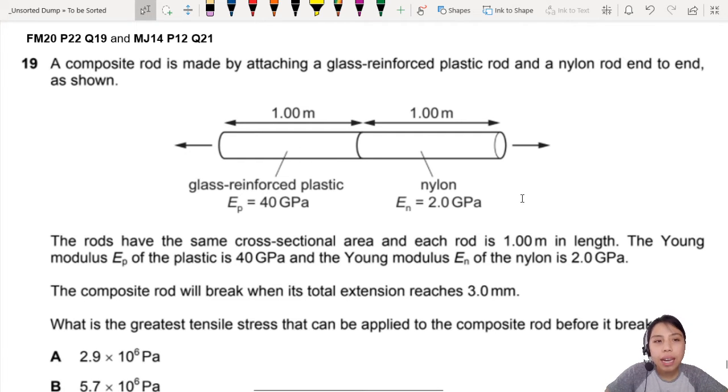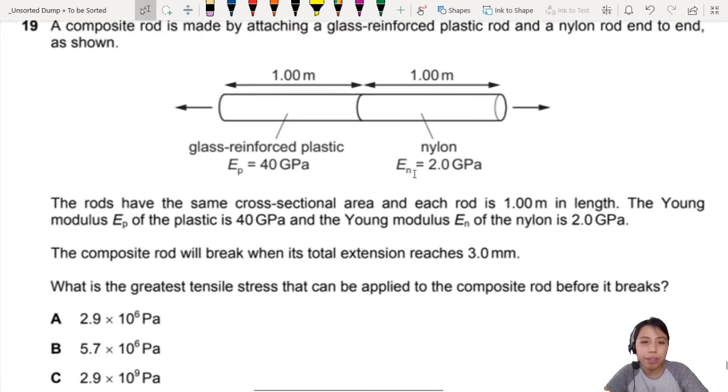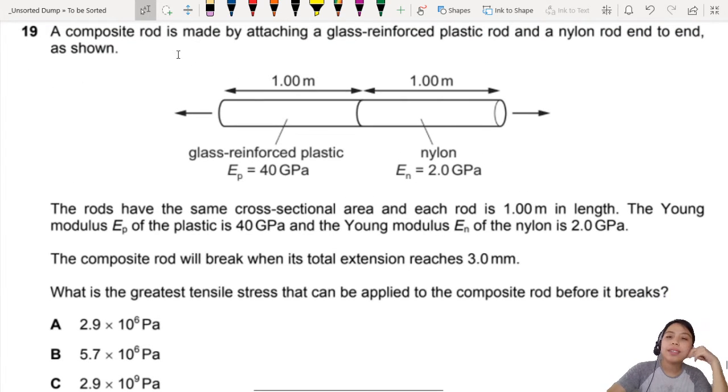A composite rod here has two types: plastic and nylon stuck together. The rods have the same cross-sectional area and each rod is 1 meter in length. When you see 1 meter, this is the original length shown to you before it's stretched. The Young's modulus is 40 GPa for plastic and 2 GPa for nylon. The composite rod will break when the total extension of the whole thing reaches 3 mm.